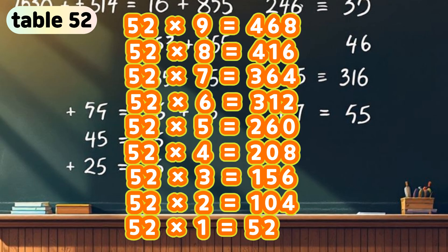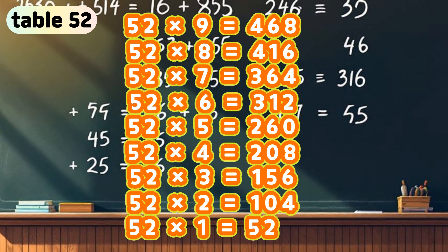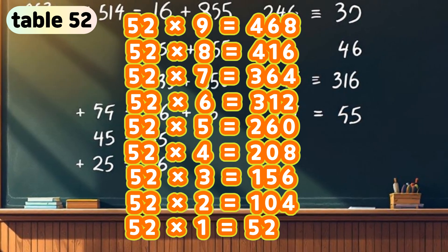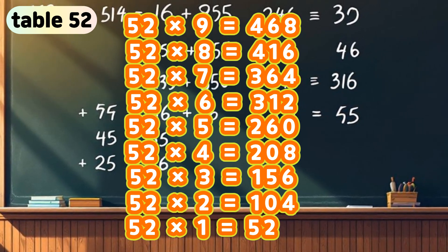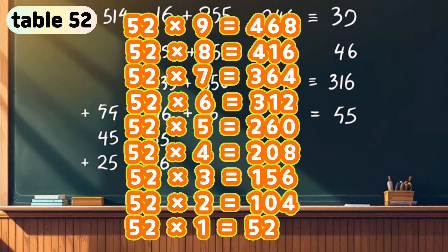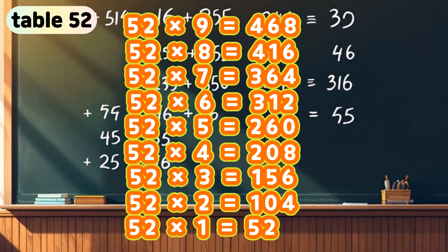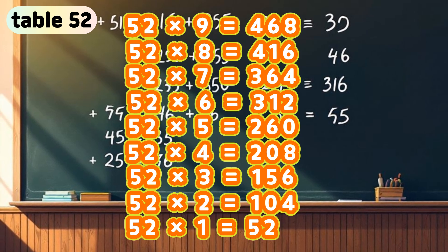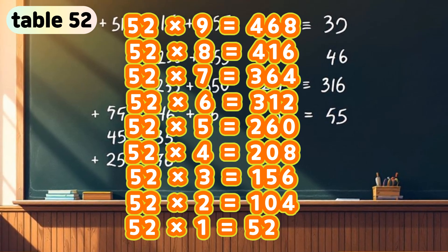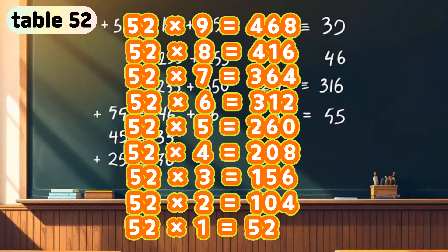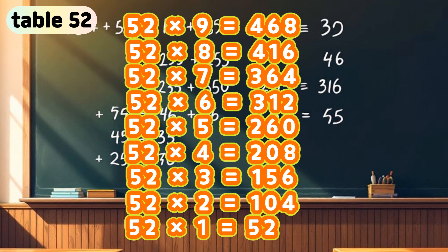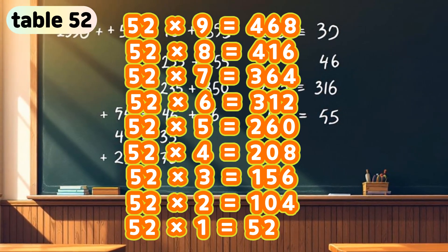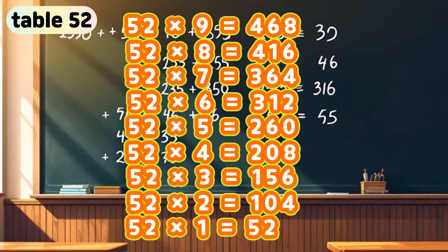Table 52. 52 times 9 is 468. 52 times 8 is 416. 52 times 7 is 364. 52 times 6 is 312. 52 times 5 is 260. 52 times 4 is 208. 52 times 3 is 156. 52 times 2 is 104. 52 times 1 is 52.